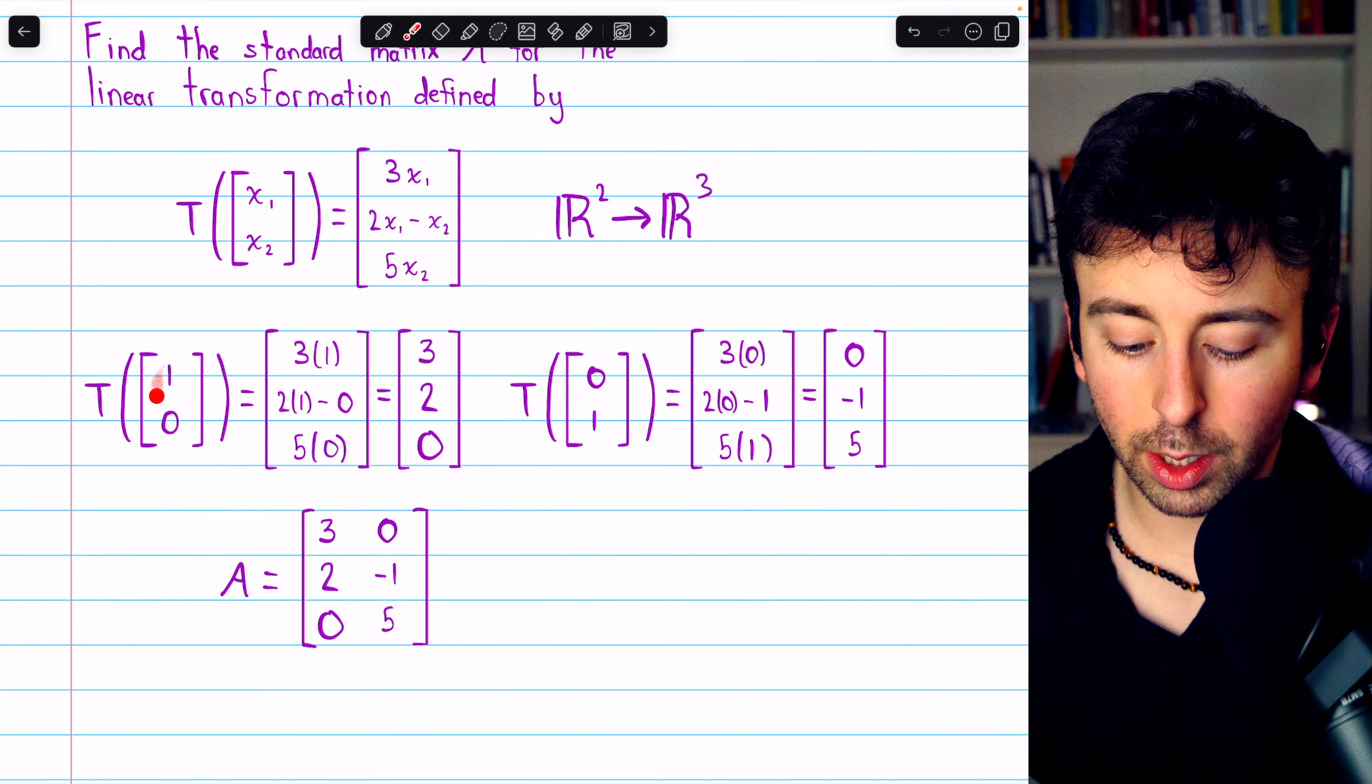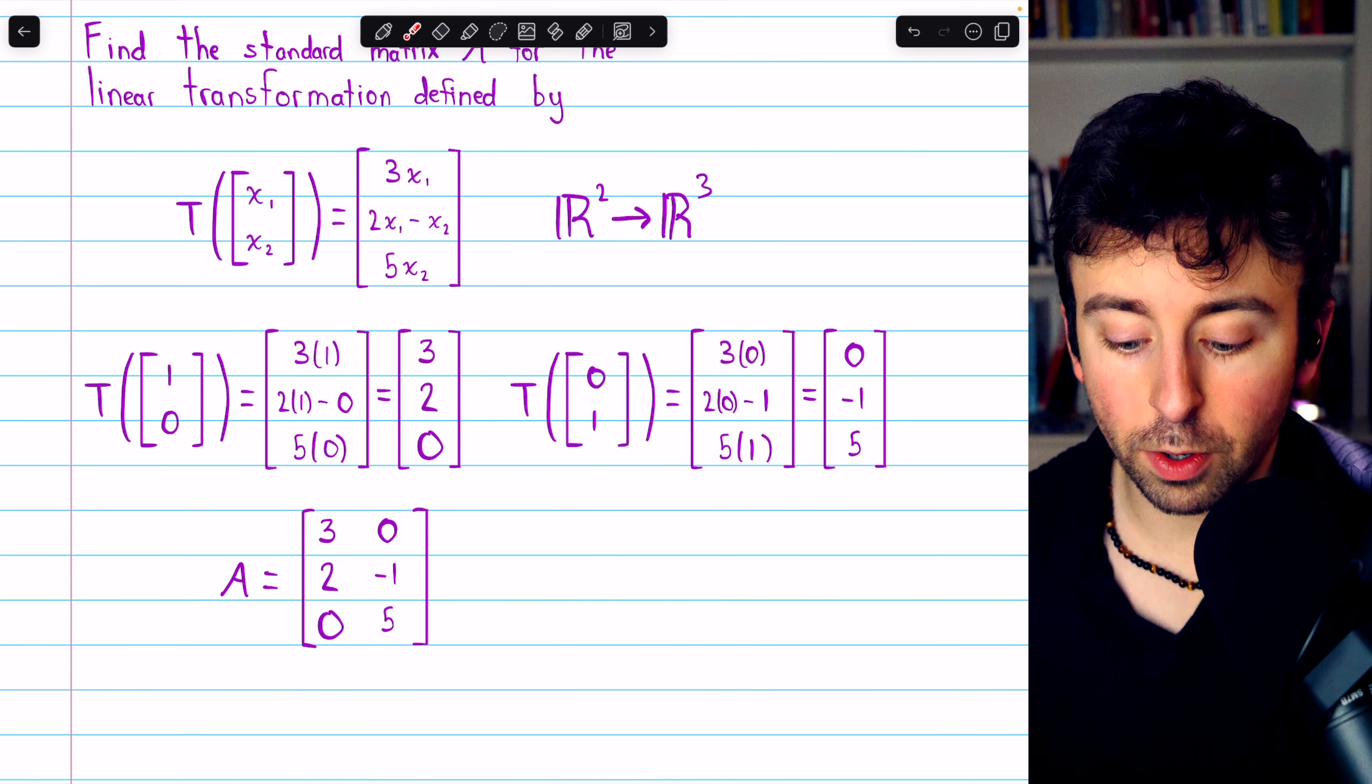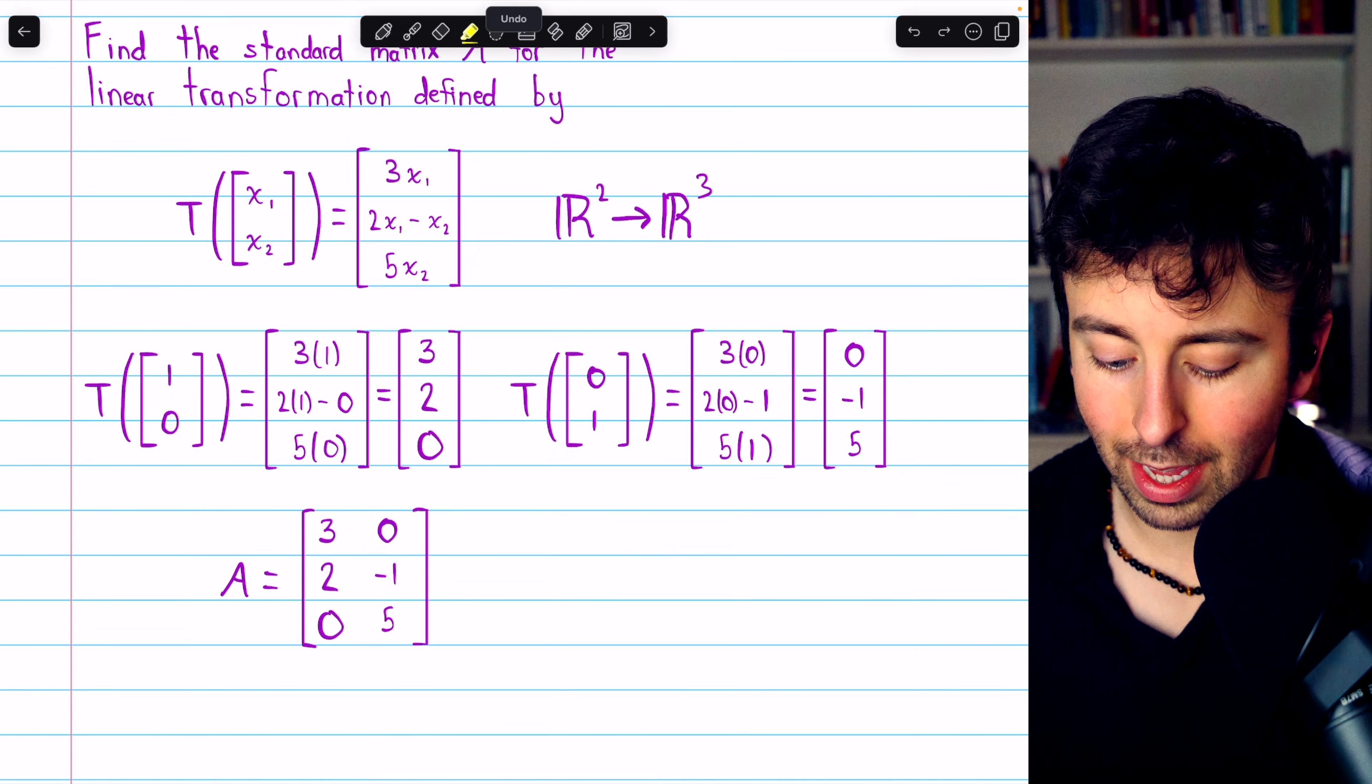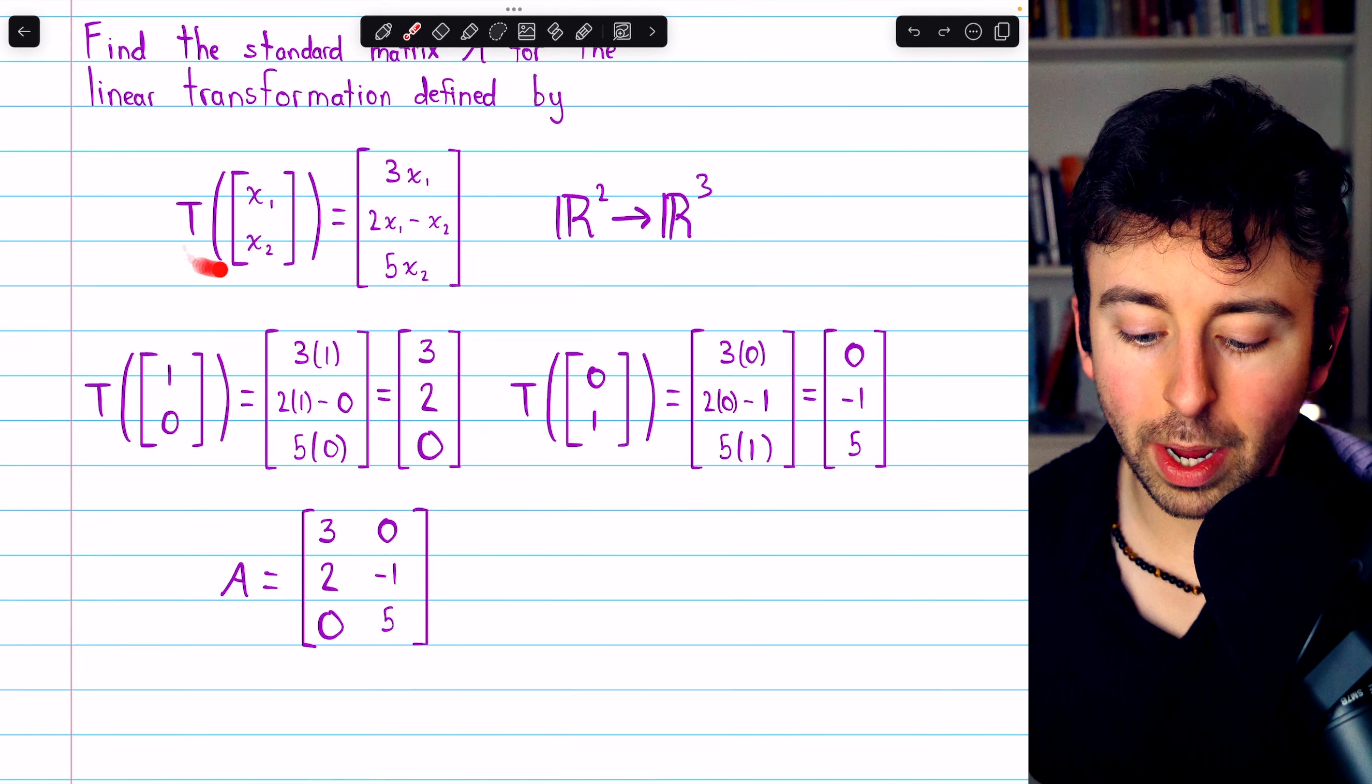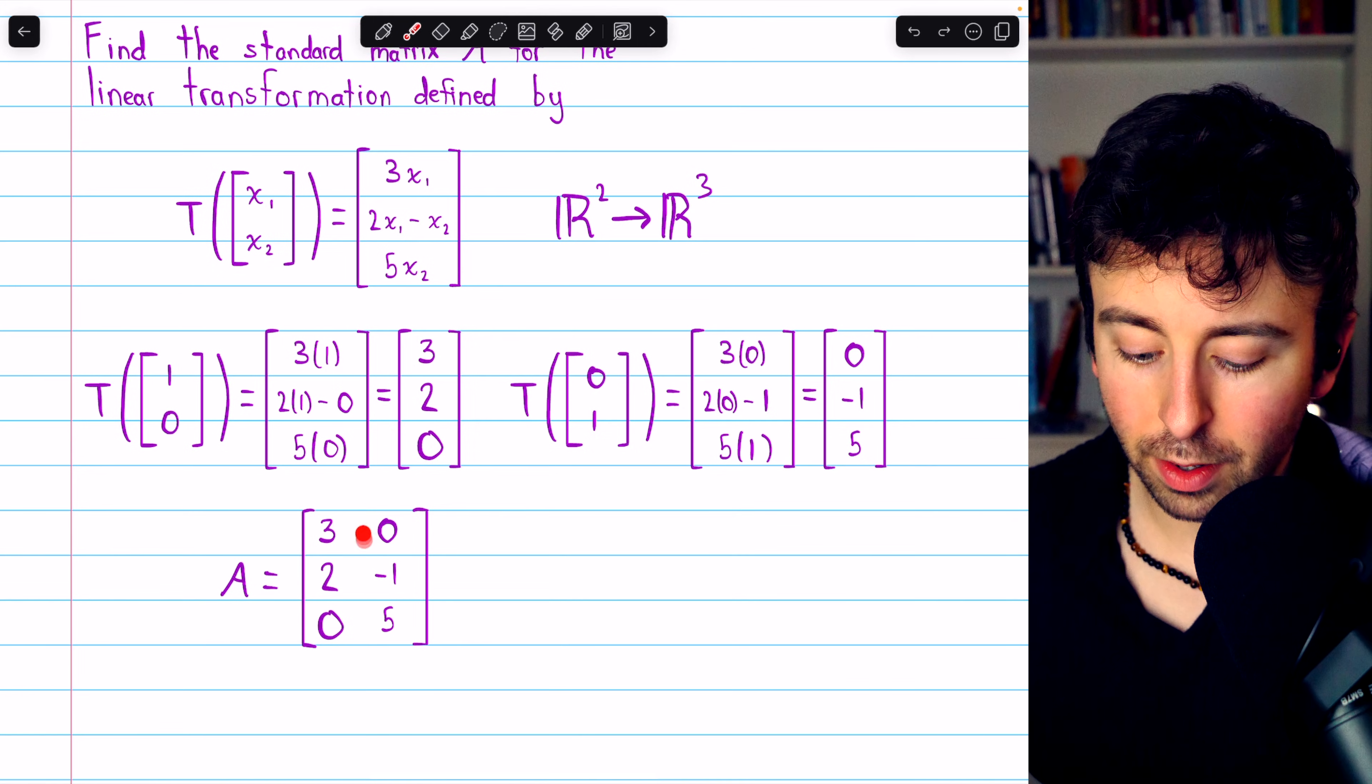Multiplying this column vector on the left by this standard matrix would produce 3, 2, 0. You can see how we would get that 3 there, and then we would get 2, and then of course we would get 0. So all this transformation T does is multiply the input vector on the left by this standard matrix.